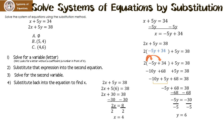So let's look at our possible answers. It's not no solution, because we have an x and a y. It's not x equals 5 and y equals 4, because we found x equals 4 and y equals 6. So the answer is C — the ordered pair (4, 6).